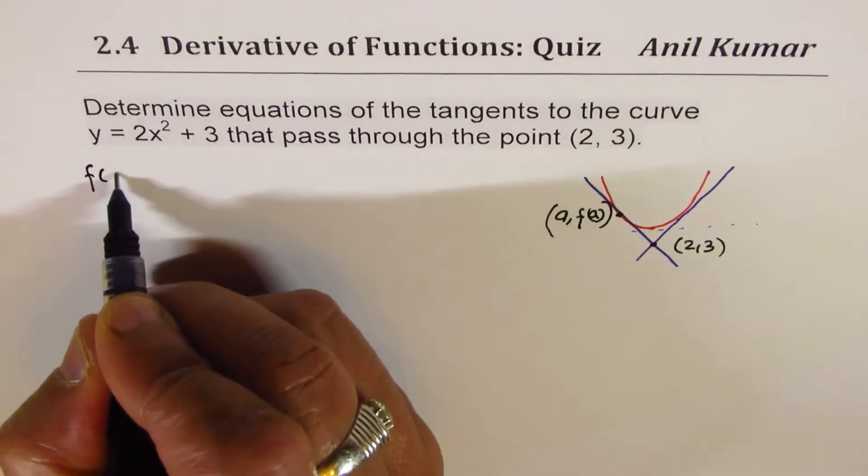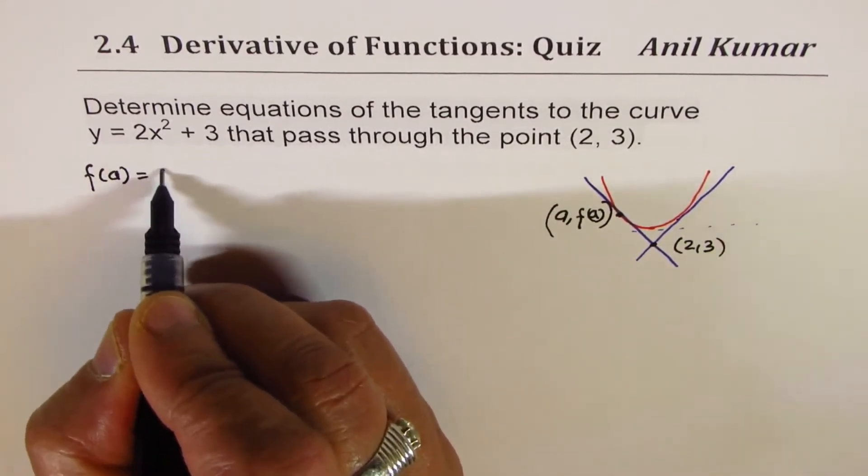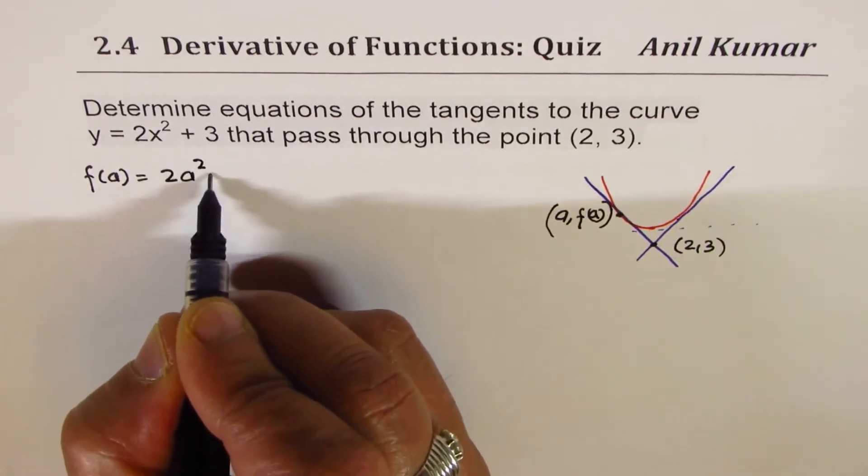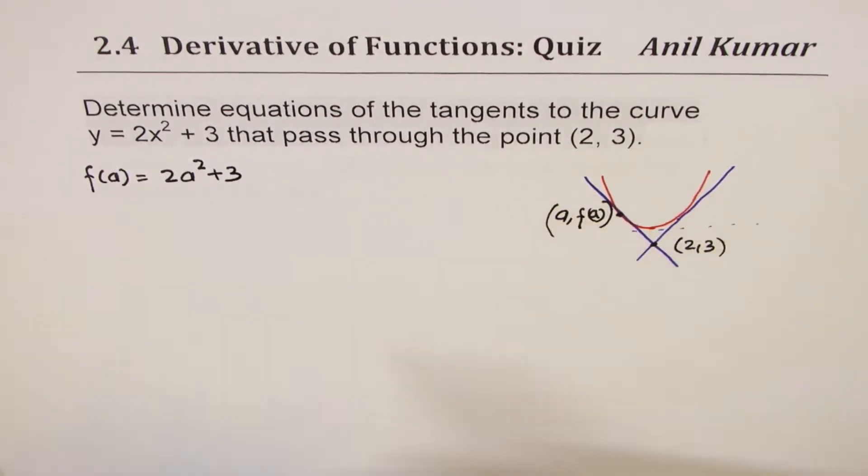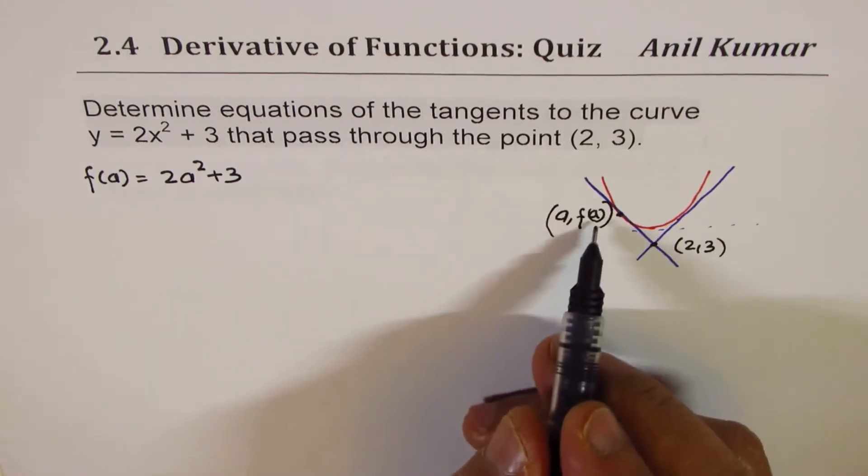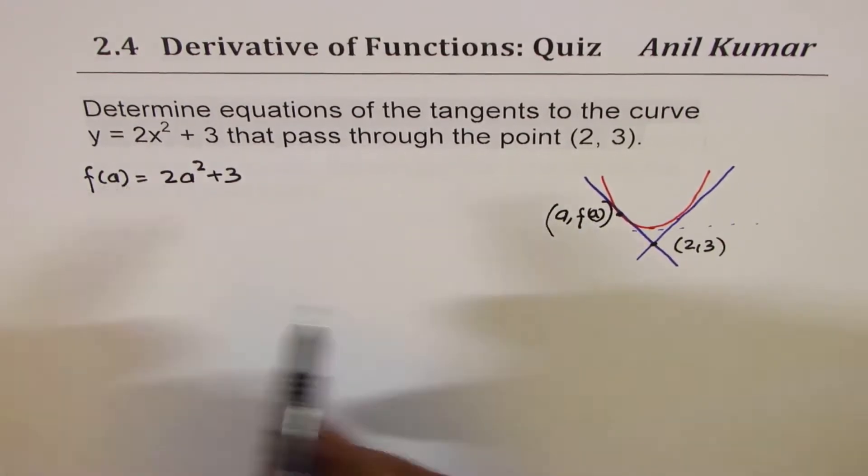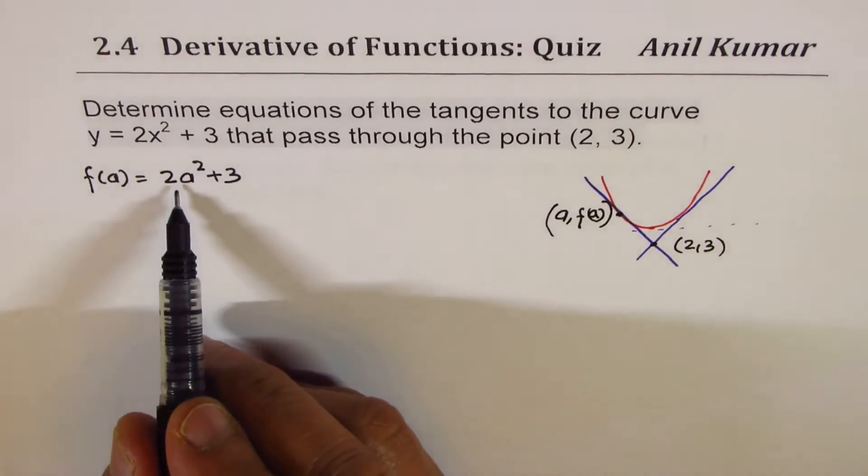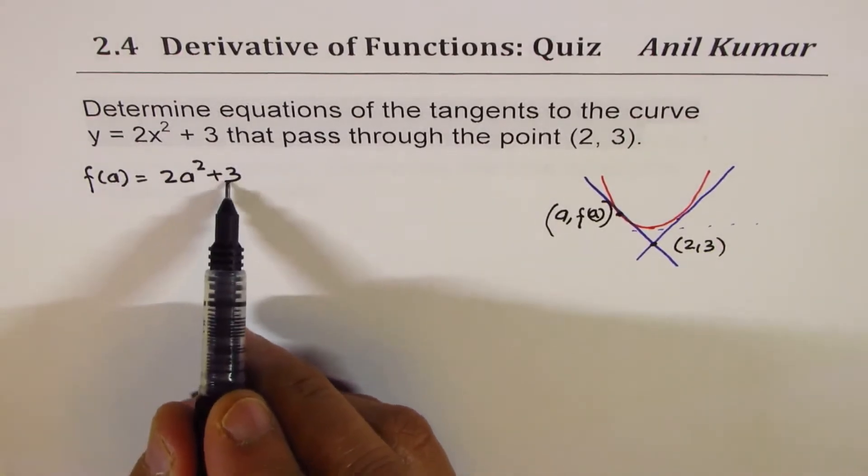So clearly, what is f(a) equals to? f(a) is 2a squared plus 3. So at a, on the curve, any point in general will be 2a squared plus 3.